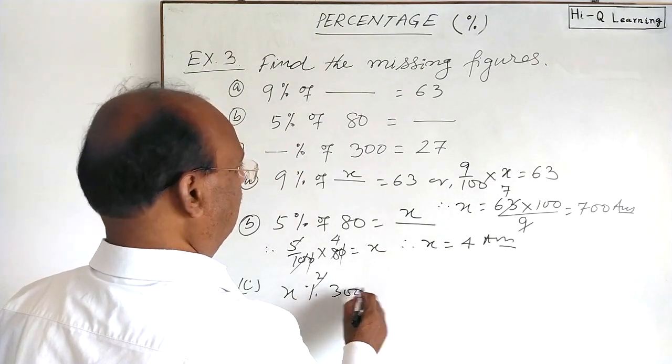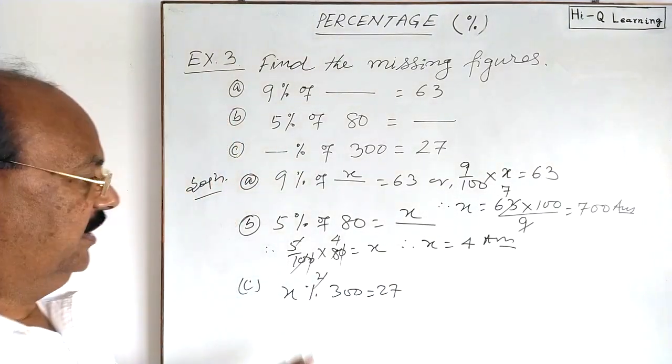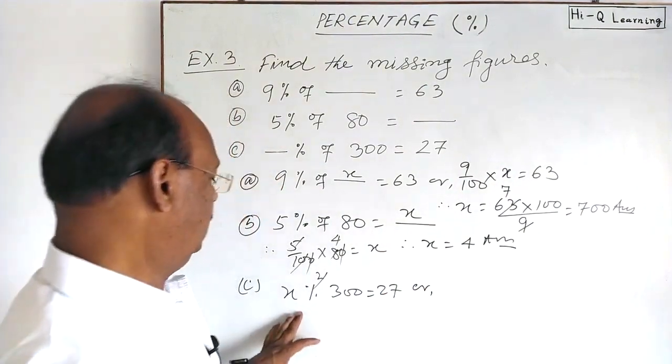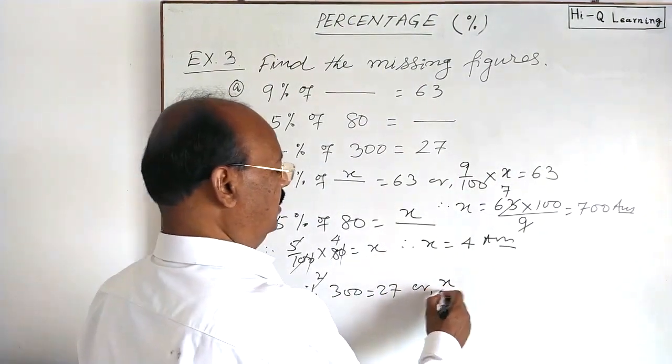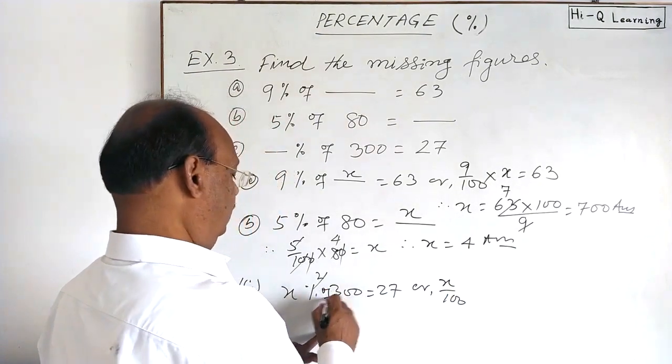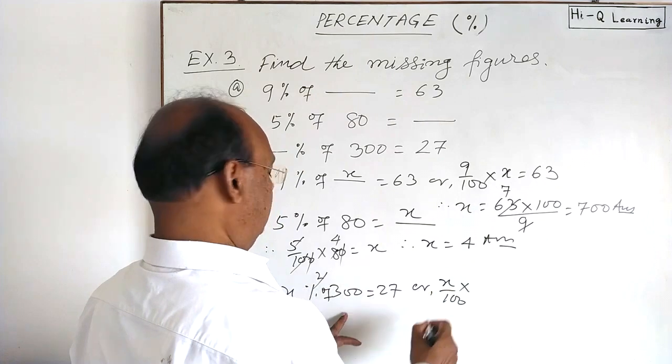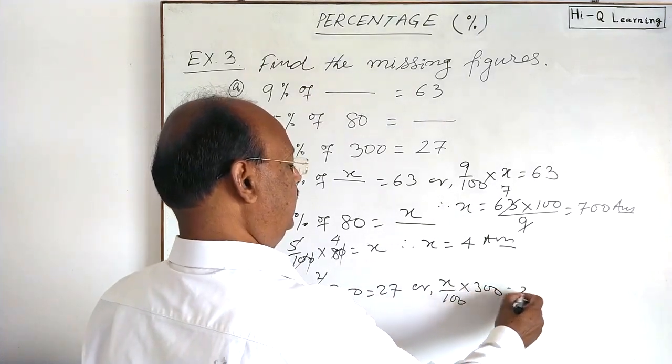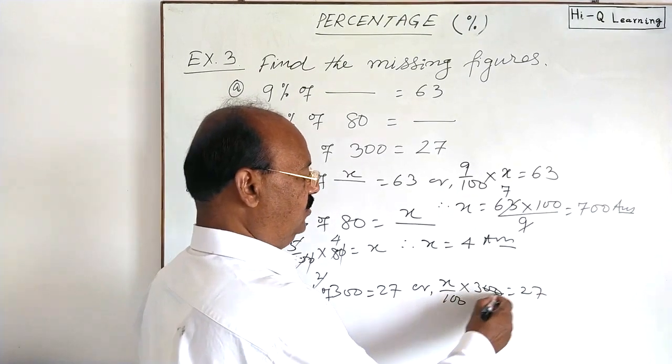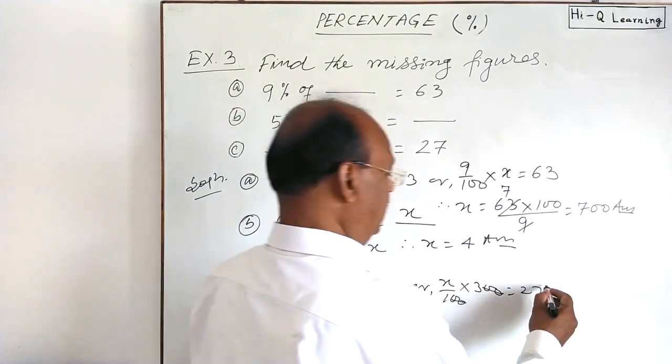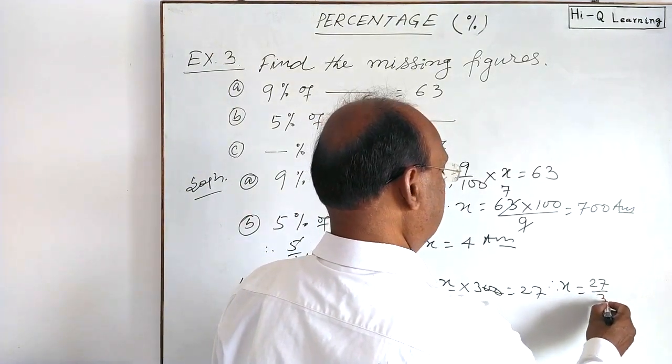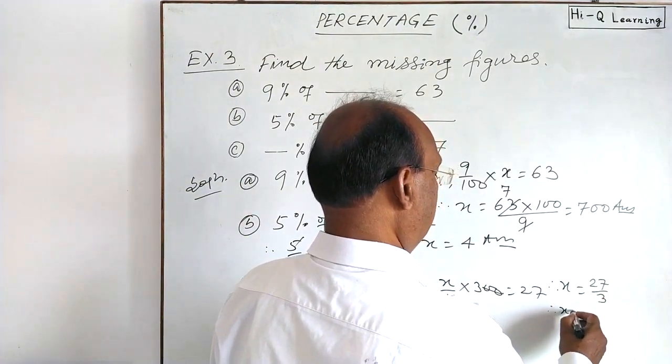300 equal 27. Let us find the value of x. x% means x/100. 'Of' means multiplication, so x/100 × 300 = 27. Simplify: two zeros cancel, so x × 3 = 27. Therefore x = 27/3 = 9. This is the answer.